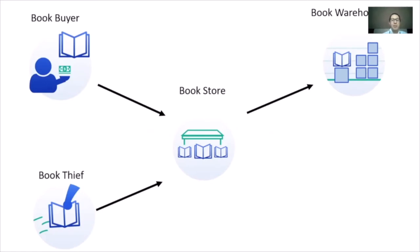Now let's look at the demo. The setup has a bookstore microservice you can buy books from via HTTP GET, a book buyer in an infinite loop buying books from the bookstore, and a book warehouse that restocks the bookstore. There's also a book thief also performing HTTP GETs on the bookstore. We want to apply a policy blocking the book thief from purchasing books, and deploy a new bookstore v2 without the book buyer experiencing any downtime.